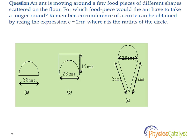An ant is moving around a few food pieces of different shapes scattered on the floor. For which food piece would the ant have to take a longer round?